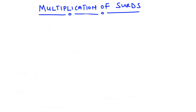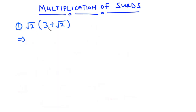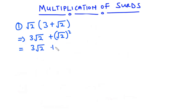For the first question, we have the square root of 2 multiplying into brackets 3 plus root 2. To solve this, let's multiply across. We have root 2 times 3, which is 3 root 2. And then we have root 2 times root 2, which is root 2 squared. We can simplify this as 3 root 2 plus — the square cancels the square root — so we are left with 2. So the final answer is 2 plus 3 root 2.